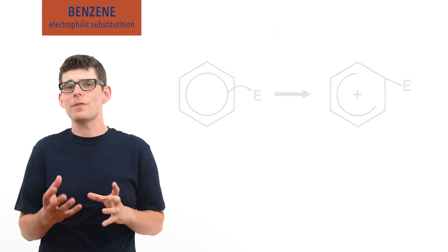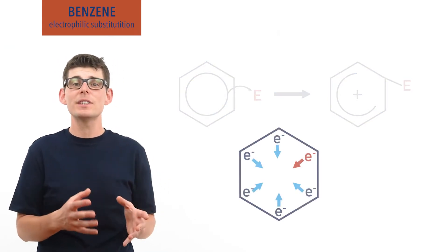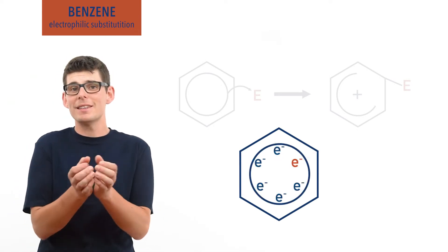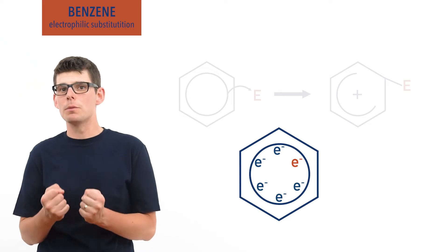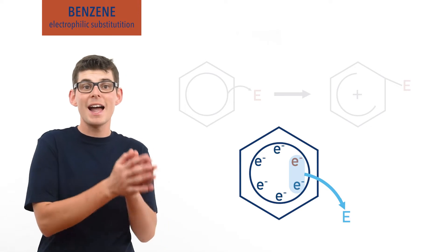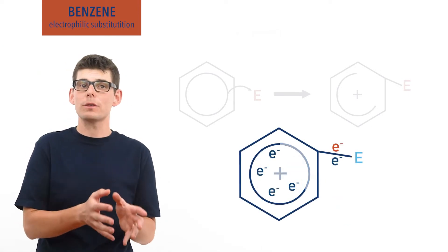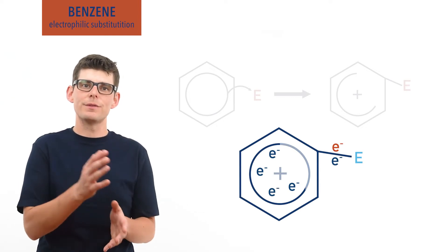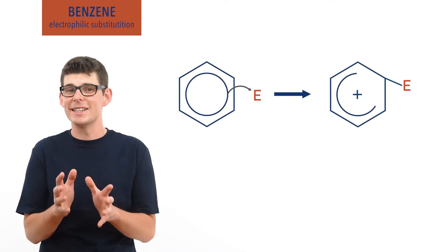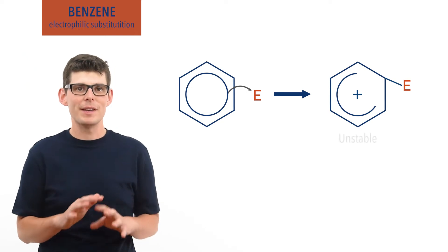A positive charge comes from the fact that the carbon forming the new bond technically gave the delocalized system one electron when the delocalized system formed, meaning when it takes out a pair of electrons to form a new bond with the electrophile, it is effectively taking back the electron for itself and removing another, meaning there are now four electrons left in the delocalized system shared out between five carbon atoms. Benzene likes its delocalized electron system. It makes it more stable and this intermediate is very unstable.